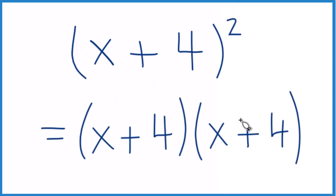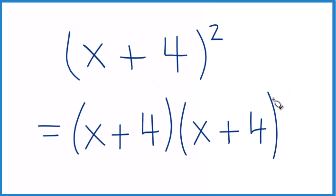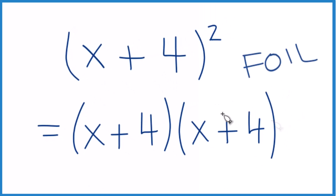Now we can use the FOIL method to expand this out and then simplify it. Basically we're just using the distributive property — x times everything here, then 4 times everything here.